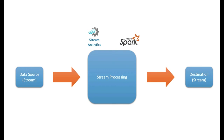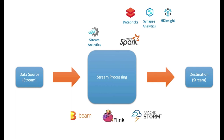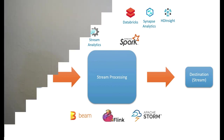The typical services for stream processing would be Azure Stream Analytics or Spark in the shape of Azure Databricks, Azure Synapse Analytics, or Azure HDInsight. We'd use Spark's structured streaming capacity, or Azure Stream Analytics does that natively. In the open-source world, you might use Apache Beam, Apache Flink, or Apache Storm — those do similar things as well.